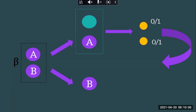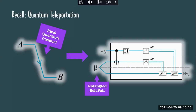Now, Bob, based on the classical bits, would perform local operations on his half of the entangled pair and recover the original quantum state that Alice was trying to send him. This is great — it got around the whole direct transmission issue. But keep in mind, this is just a one-way communication channel between Alice and Bob.